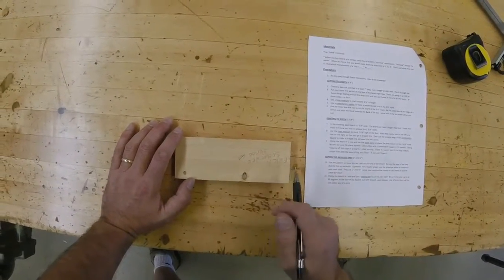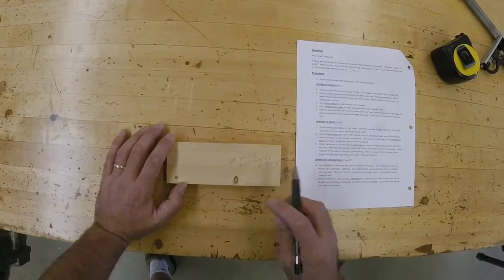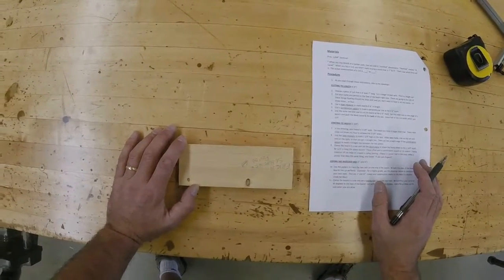Okay, and the drawing shows your board is two and three-eighths inches wide. The board you have is bigger than that. These next steps will show you how to achieve the two and three-eighths inch width.